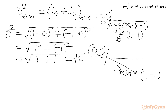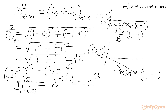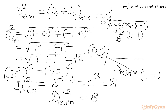Now it is asked to find d to the power 12. We raise d squared to the power 6 so that the LHS becomes d to the power 12. On the RHS we get (square root of 2) to the power 6, which equals 2 to the power (6 times one-half), equal to 2 to the power 3, which is 8. So the minimum value of d to the power 12 is 8.